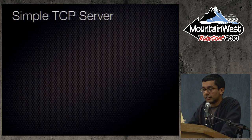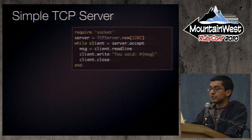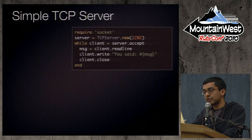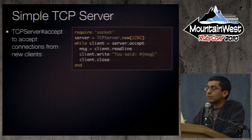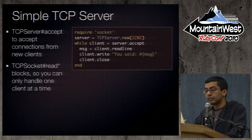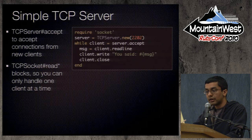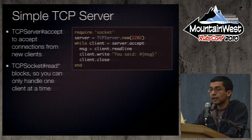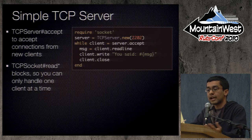Using the higher-level APIs, if you want to write a very simple TCP server, you can do it in a few lines of code. You start up a TCPServer object, accept new connections, and that client is a TCPSocket you can read and write from. An important thing to notice: any time you call a read or write function on a socket, it's a blocking call. This means you can only handle one client at a time — if the code is calling client.readline, you'll just sit there waiting until that client sends a line.